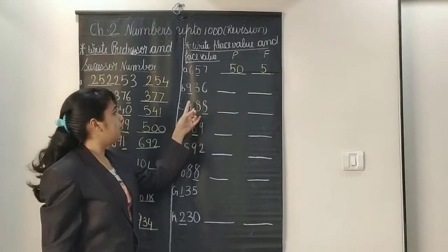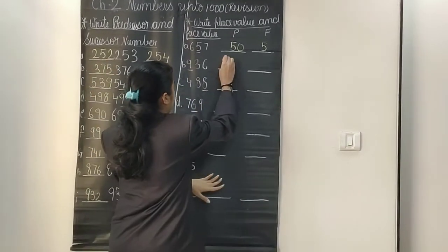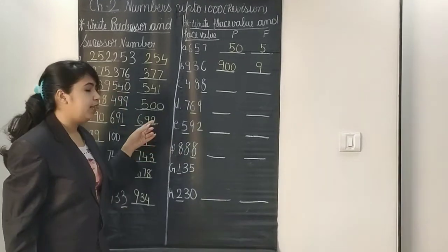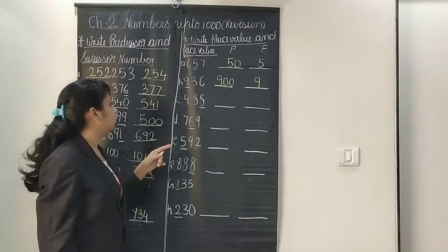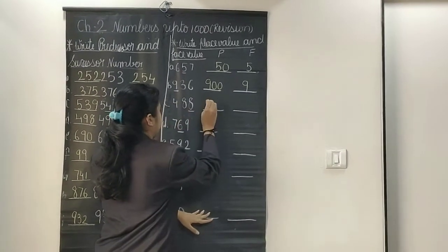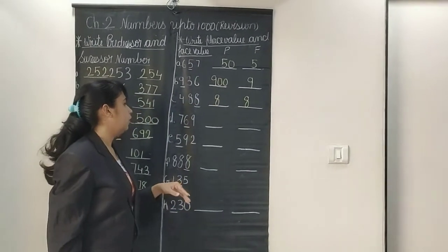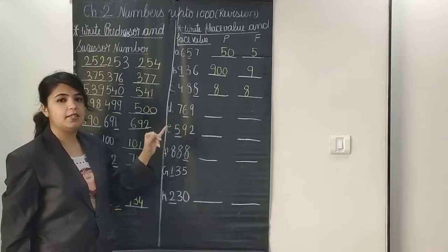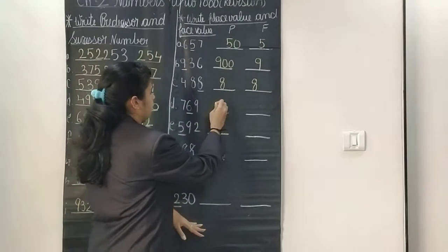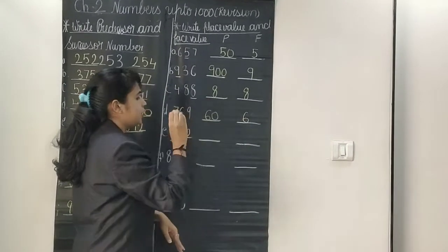Now 936 — they have asked about the digit at the hundreds place, so the place value is 900 and the face value remains 9. Next, 488 — they have asked about the digit at the ones place. The place value is 8 and the face value is also the same, 8. Now 769 — I will write 60 as the place value and the face value remains the same digit, which is 6.